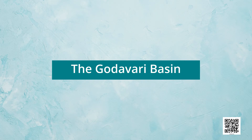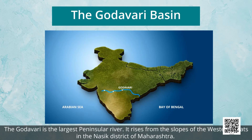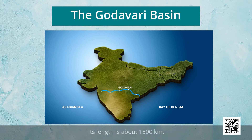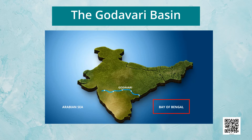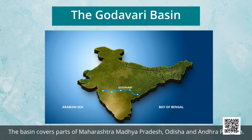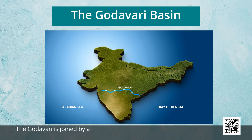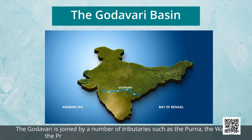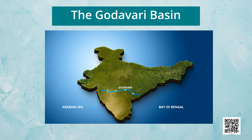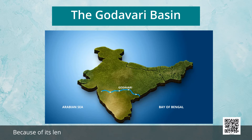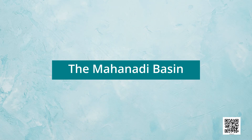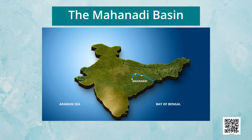The Godavari is the largest peninsular river. It rises from the slopes of the Western Ghats in Nasik district of Maharashtra. Its length is about 1,500 kilometers and it drains into the Bay of Bengal. Its drainage basin is also the largest among the peninsular rivers, covering parts of Maharashtra, Madhya Pradesh, Odisha, and Andhra Pradesh. The Godavari is joined by tributaries such as the Purna, Wardha, Pranhita, Manjara, Wainganga, and Penganga. Because of its length and the area it covers, it is also known as Dakshin Ganga.